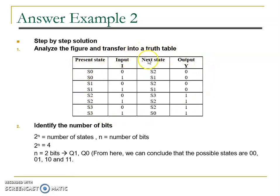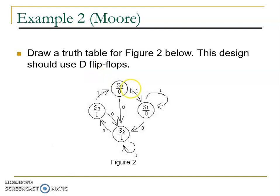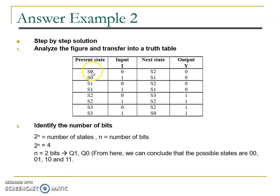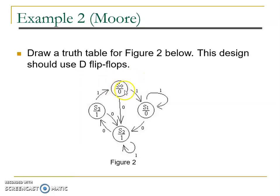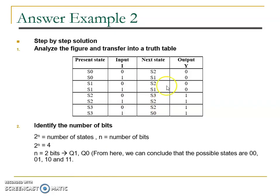In this table, we still use the name of each state: S0, S1, S2, and S3. For S0 with input 0 and input 1, the next state will be S2 and S1 respectively.